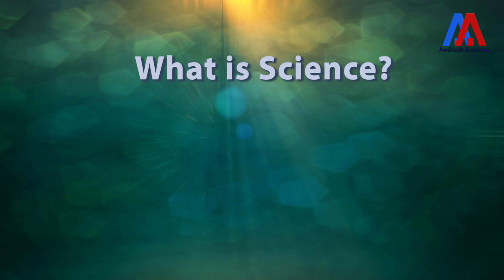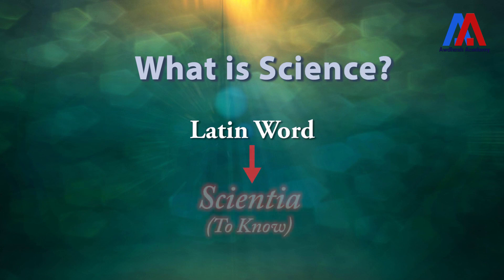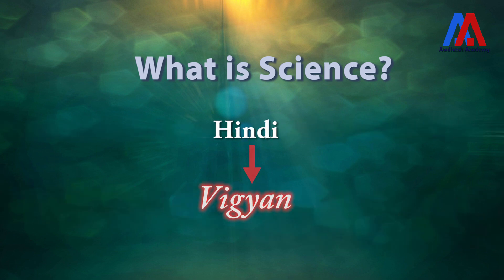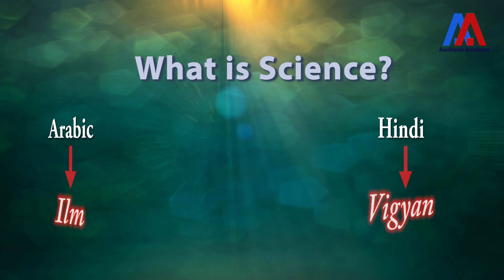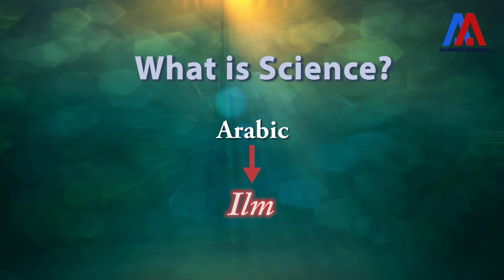First let us know what is science. Science is made from a Latin word 'scientia' which means basically 'to know' — that means to acquire knowledge, to know about something. That is what science is. In Hindi or Sanskrit we call it 'vigyan' and in Arabic it is called 'ilm', which also means knowledge.